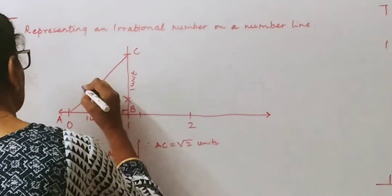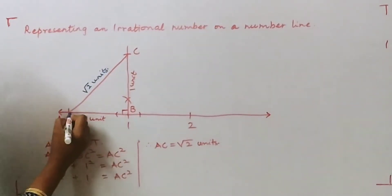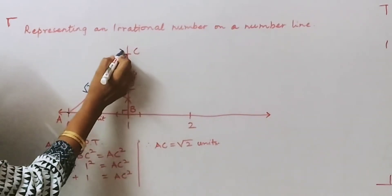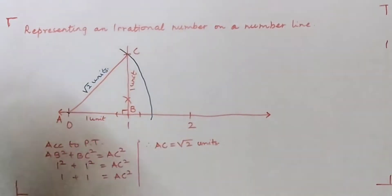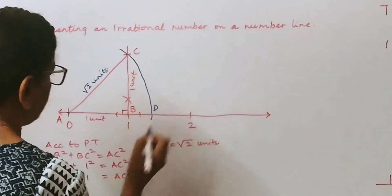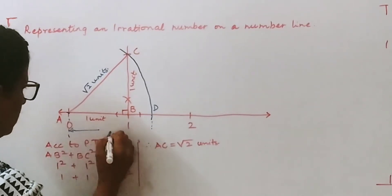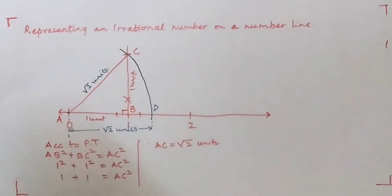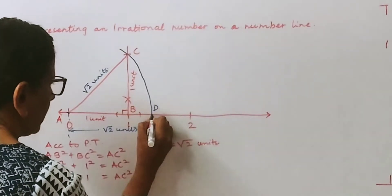Now we write that this is √2 units. To mark √2 on the number line, we put the point of the compass at A, take the radius up to C, and draw the arc. We call this point D. The measure from here to here — from A to D — is root two units. That is how we mark the first irrational number, √2, on the positive side of the number line.